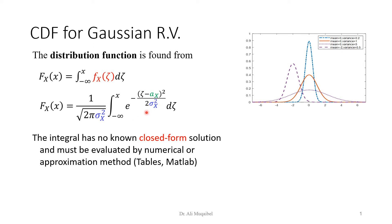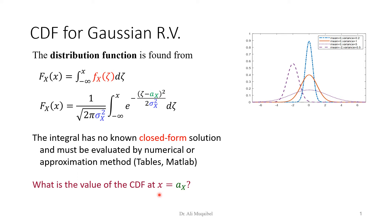To evaluate the CDF we use numerical approximation, tables, or MATLAB. Now, there is one important special value: if you evaluate the CDF at X equal to the mean a_X, the integration becomes up to half the area, so the answer is 0.5. The CDF at the mean is always 0.5 for a Gaussian or any symmetric distribution — no table or calculator needed.